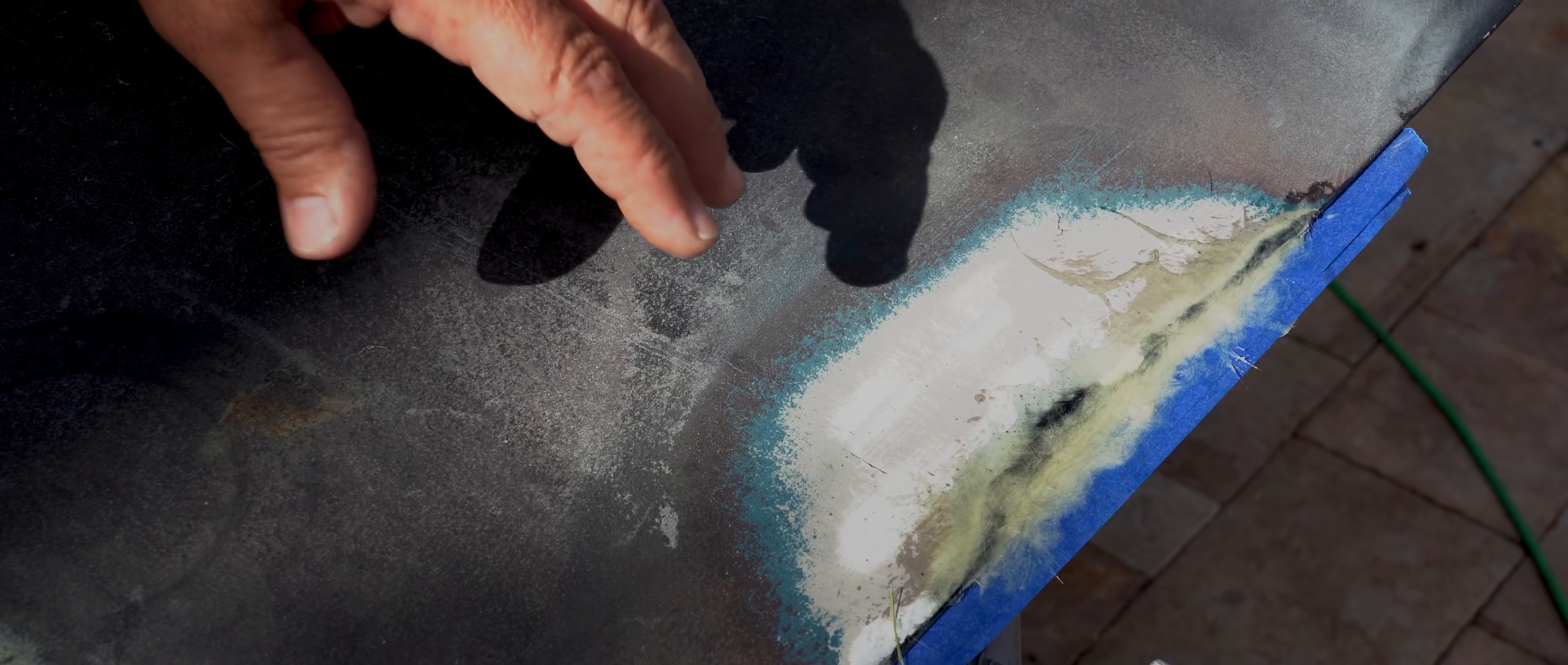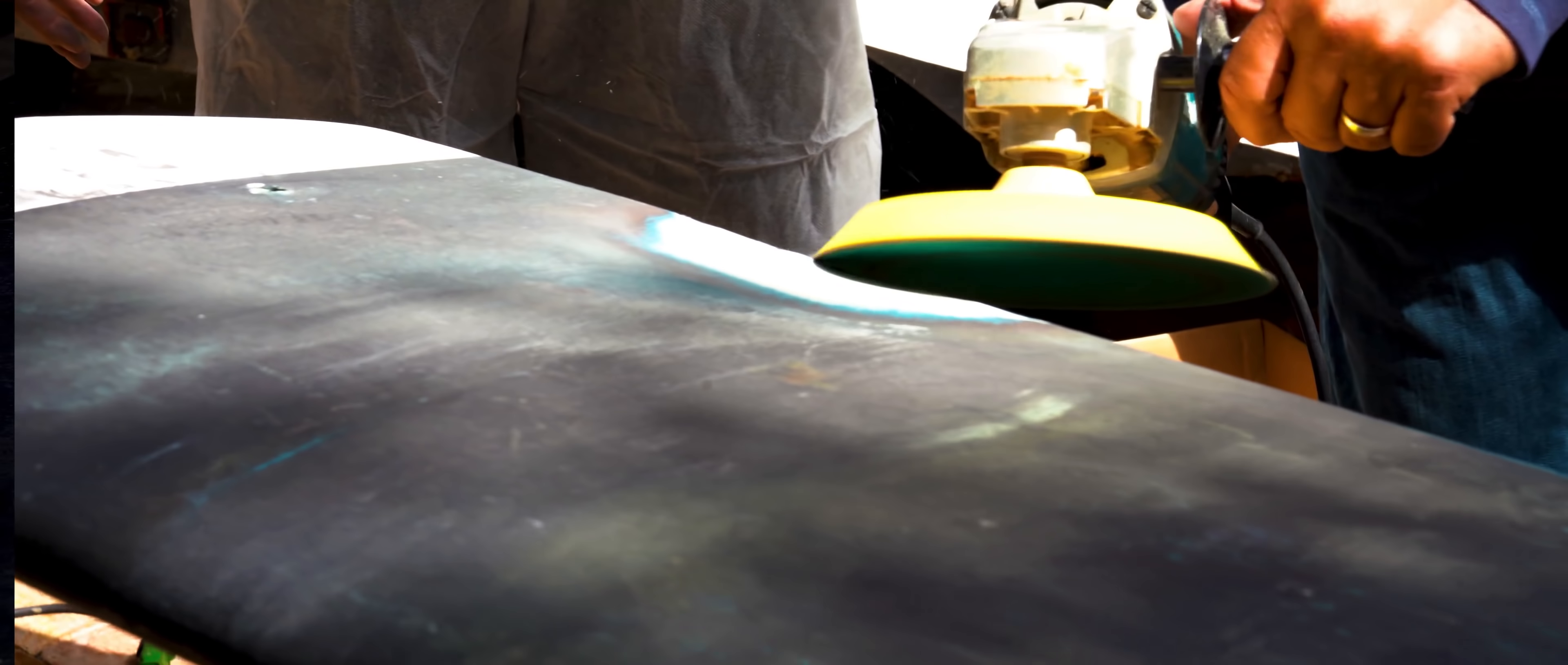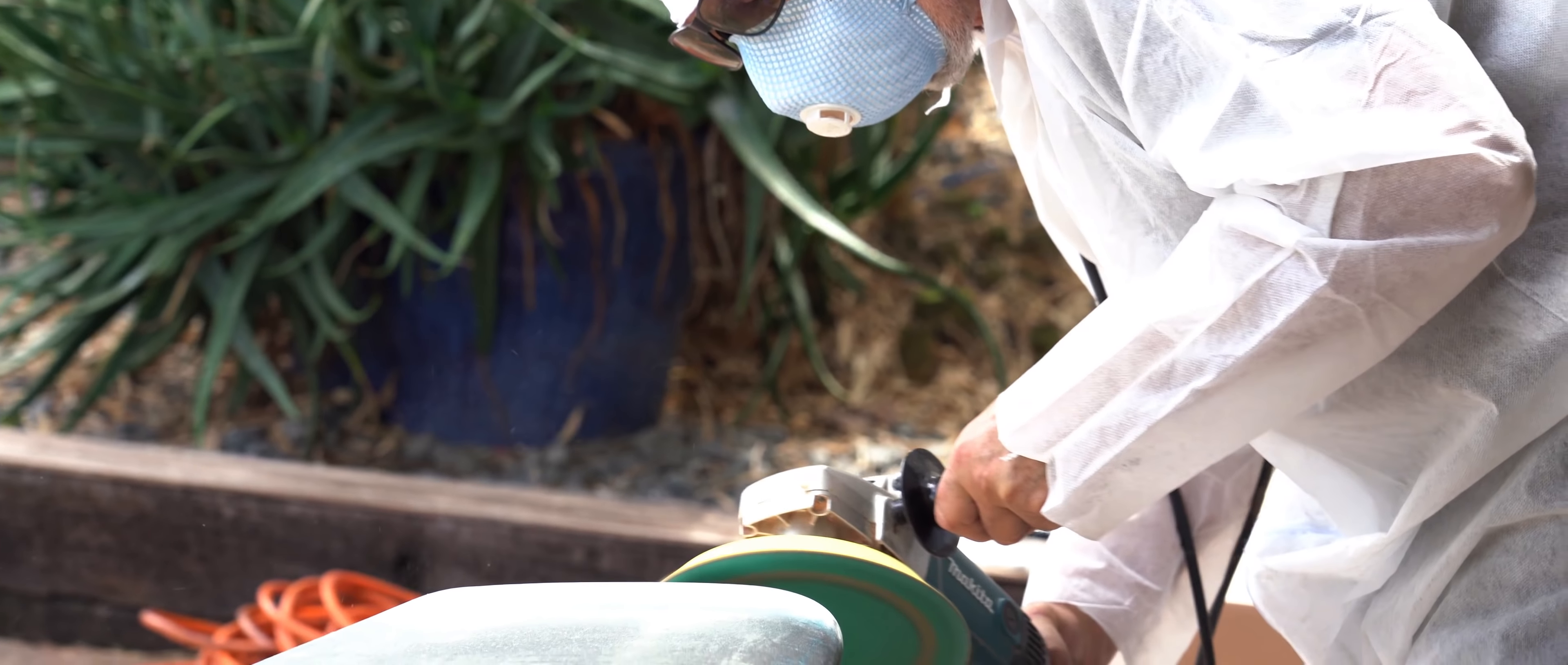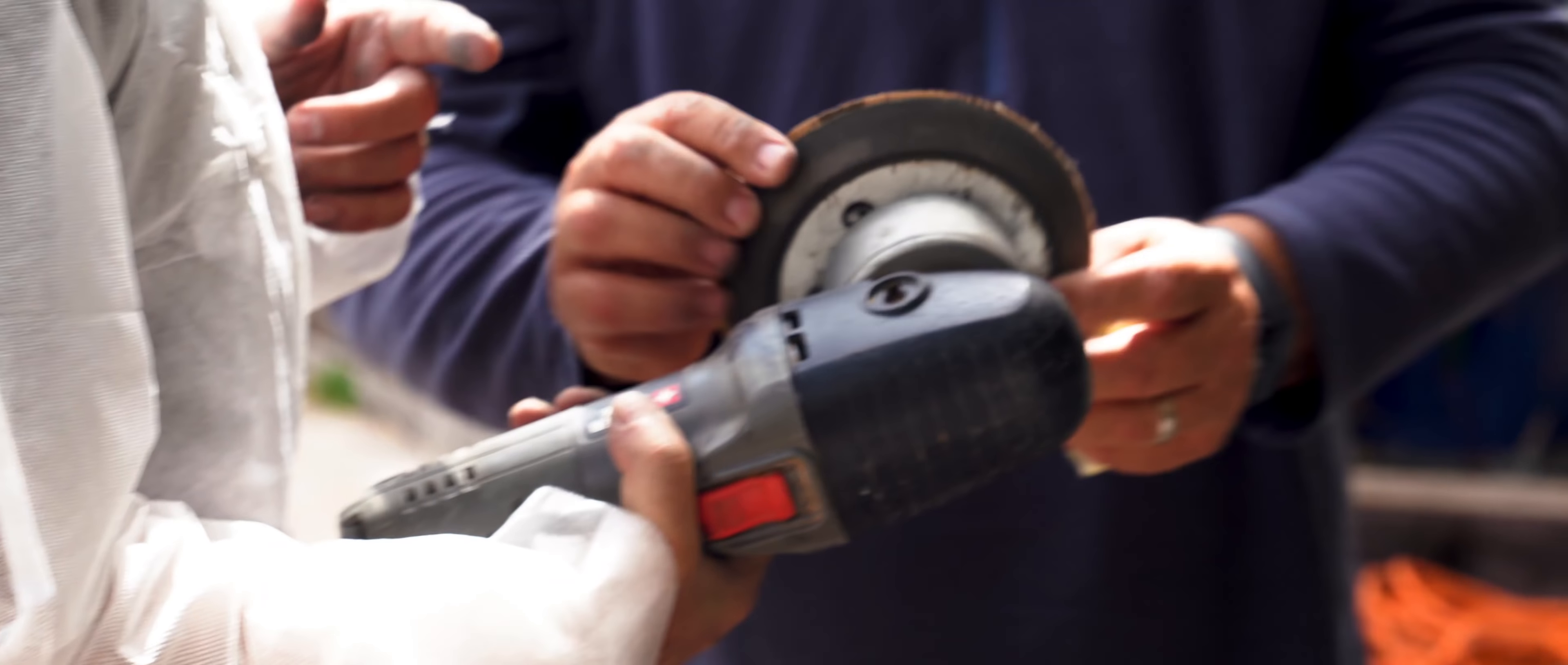He grinded the crack, the main part, and the laminated fiberglass fibers and then he went ahead and feathered with a DA and 80 grit paper. All the bottom paint got to the epoxy, got everything clean so we can start laminating over there. Over here at the bottom, he did exactly the same thing. Removed all the bottom paint and all the contaminants.